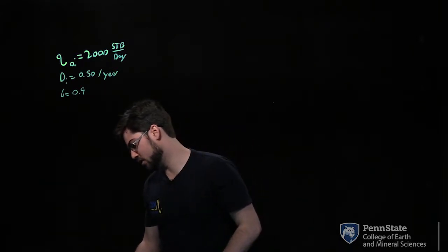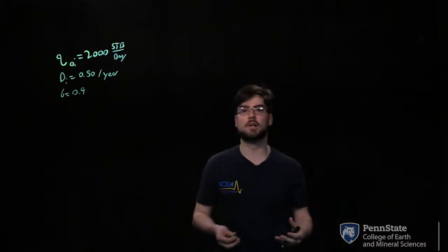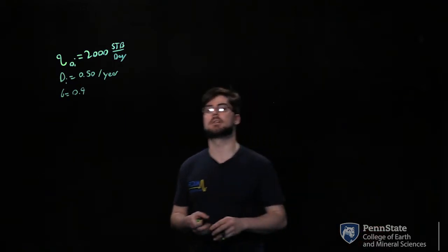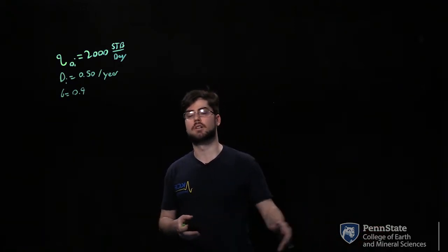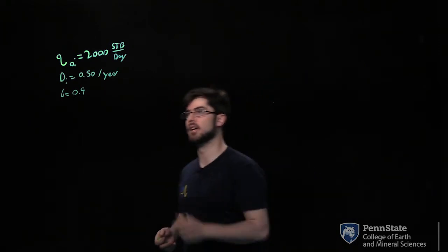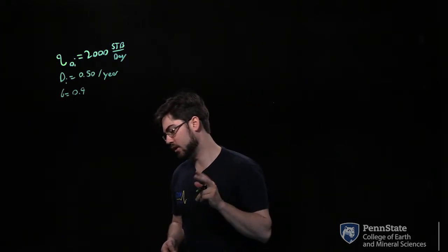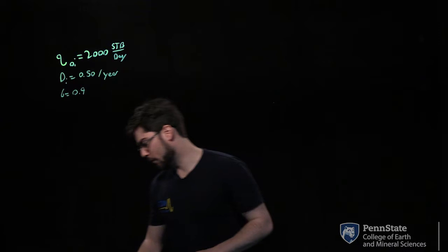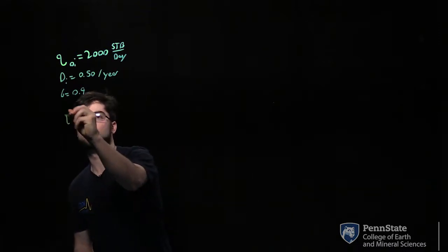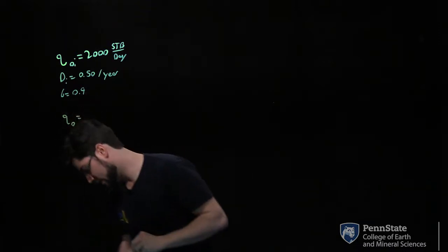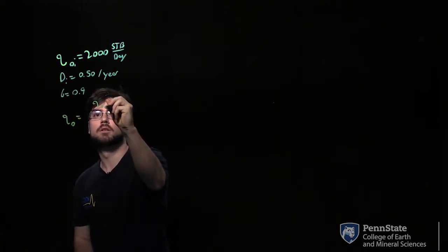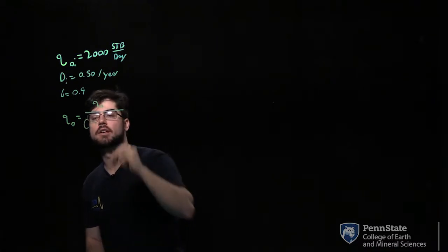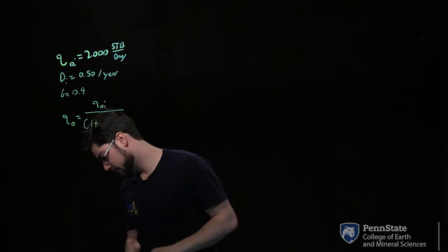There are a couple of equations we're going to be using. We're trying to find future production rates at different times and also what our cumulative production is. We're going to use equations 4.73 and 4.74. Equation 4.73 is for hyperbolic decline: production of oil equals your initial production of oil...